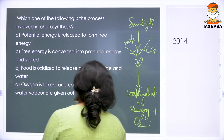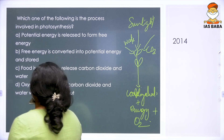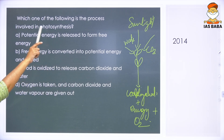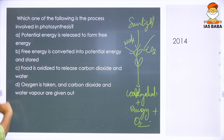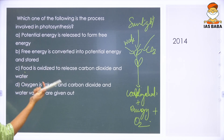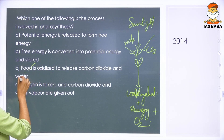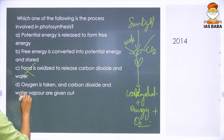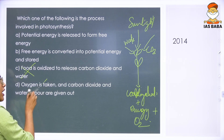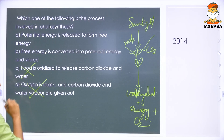Even oxygen is given out. Now, the answer options are: potential energy is released to form free energy; free energy is converted into potential energy and stored; food is oxidized to release carbon dioxide and water — that is clearly wrong; oxygen is taken in and carbon dioxide and water vapor are given out — that is also wrong.